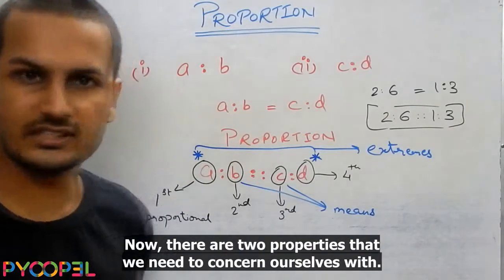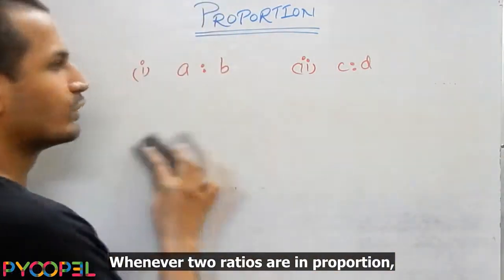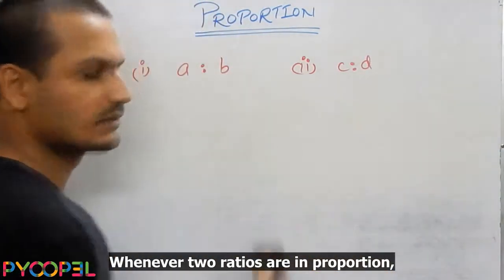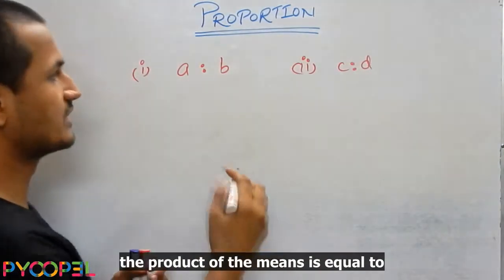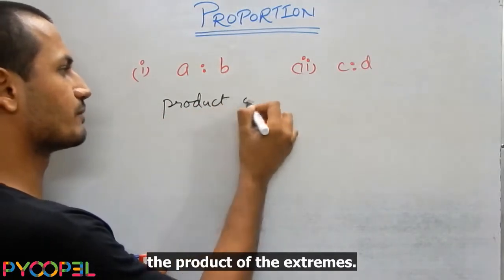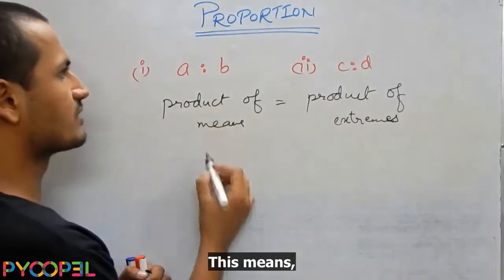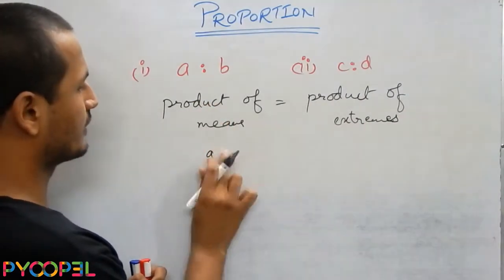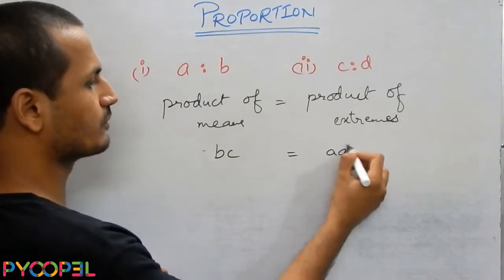Now there are two properties that we need to concern ourselves with. Whenever two ratios are in proportion, the product of the means is equal to the product of the extremes. This means BC is equal to AD.